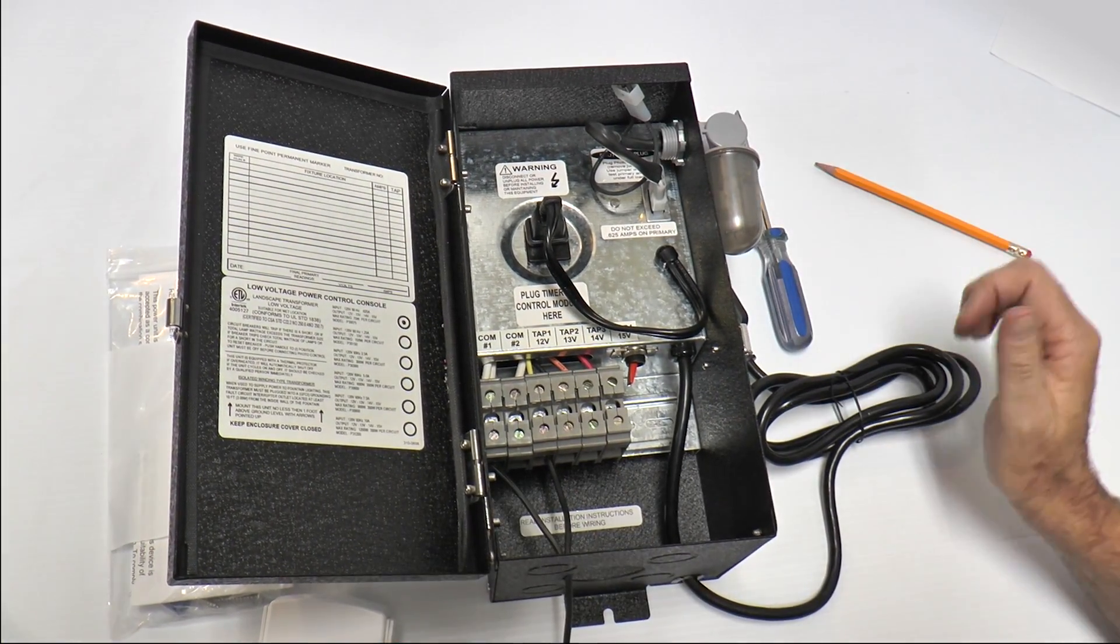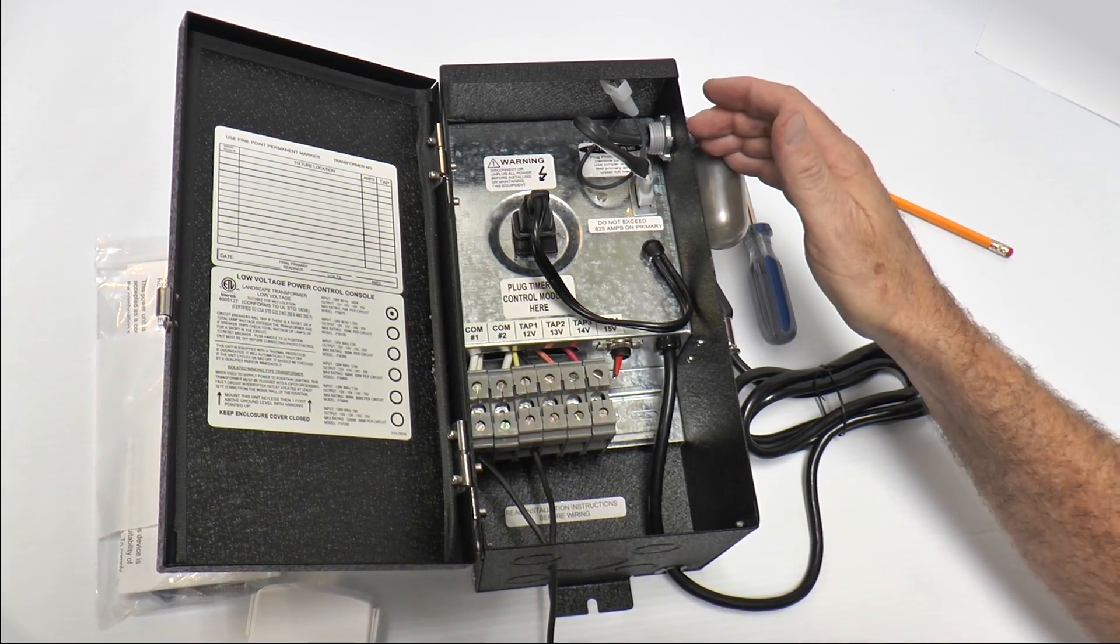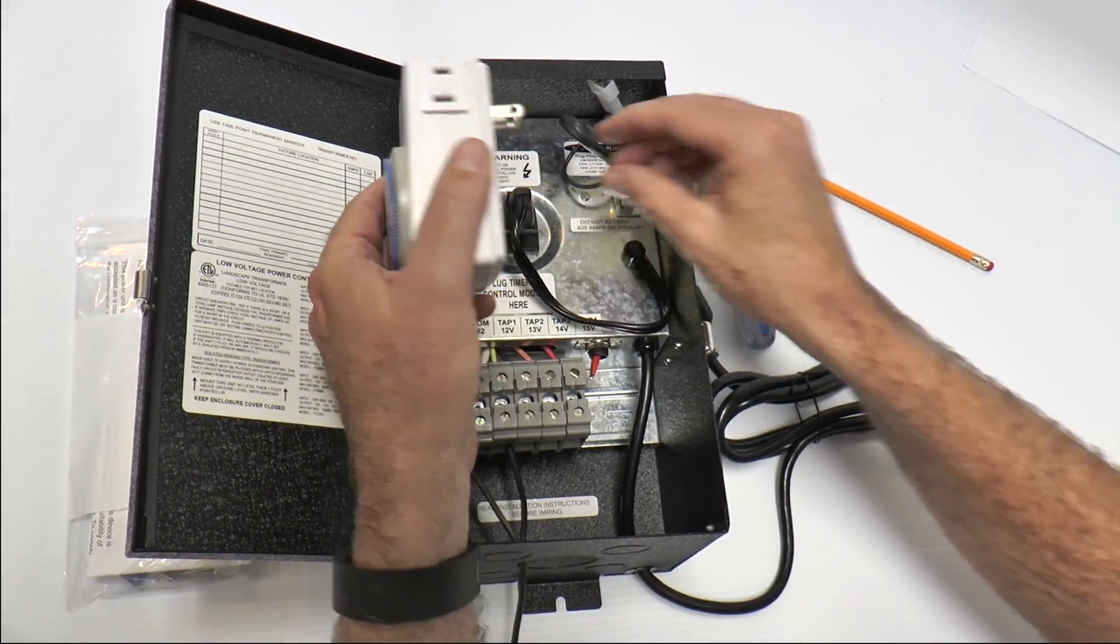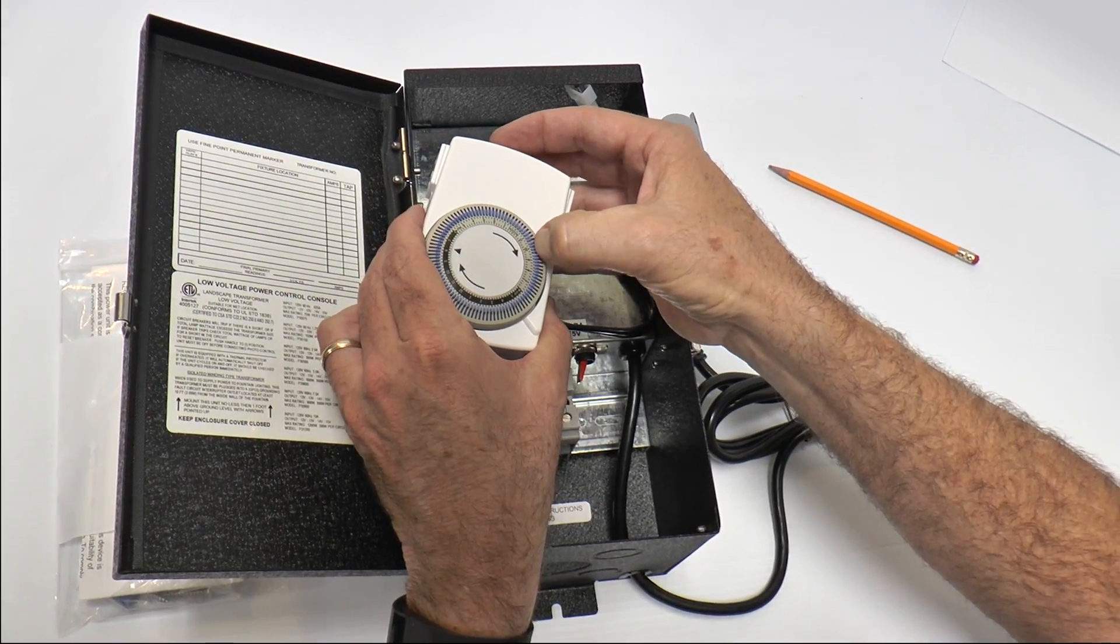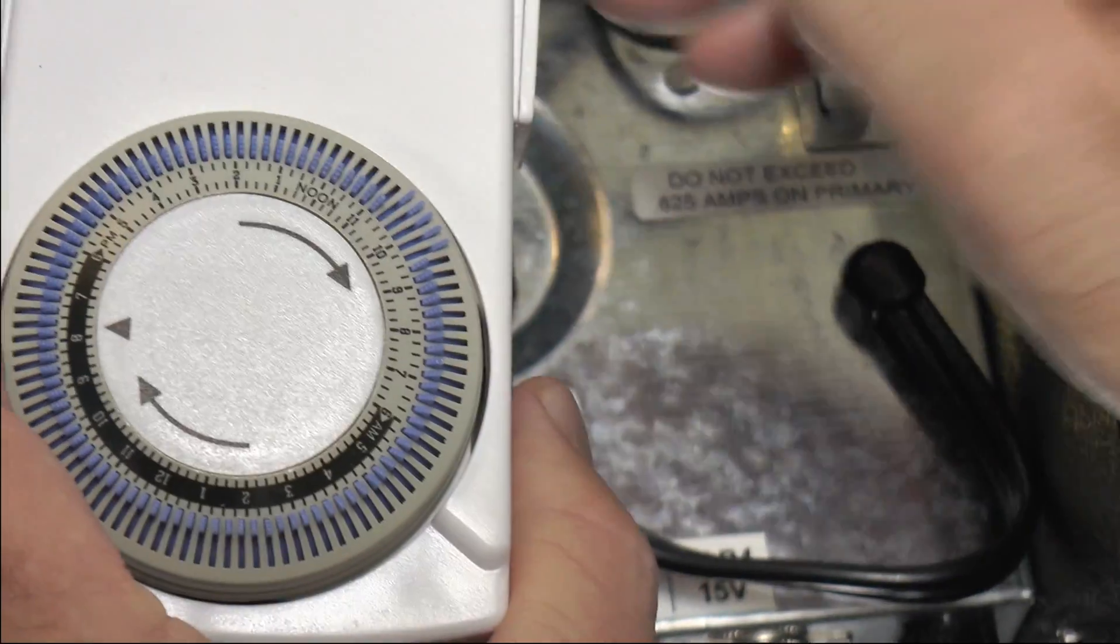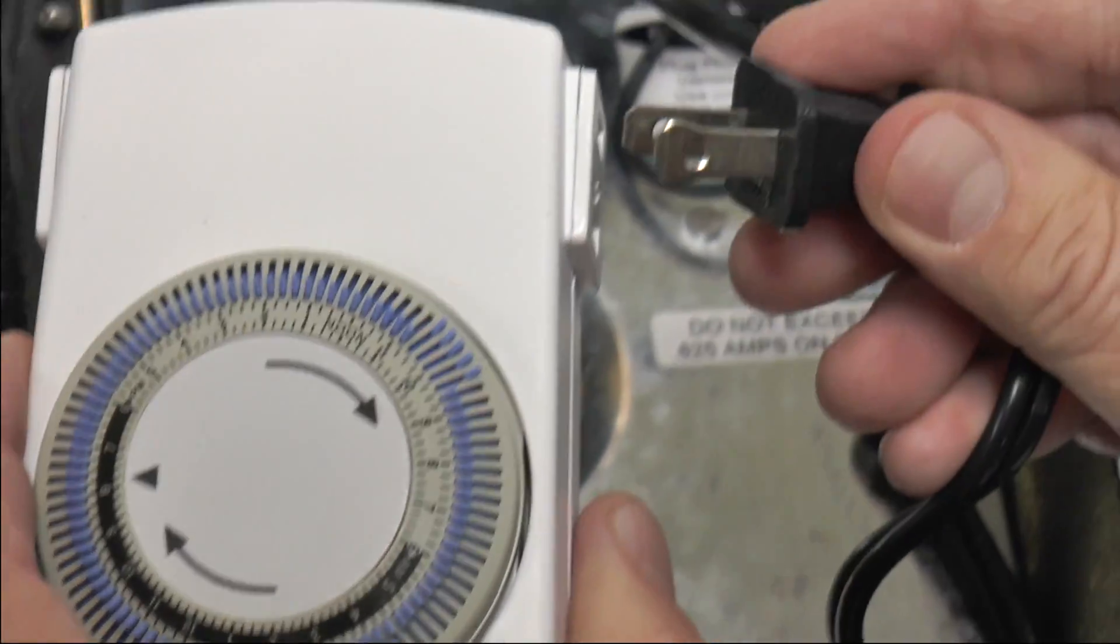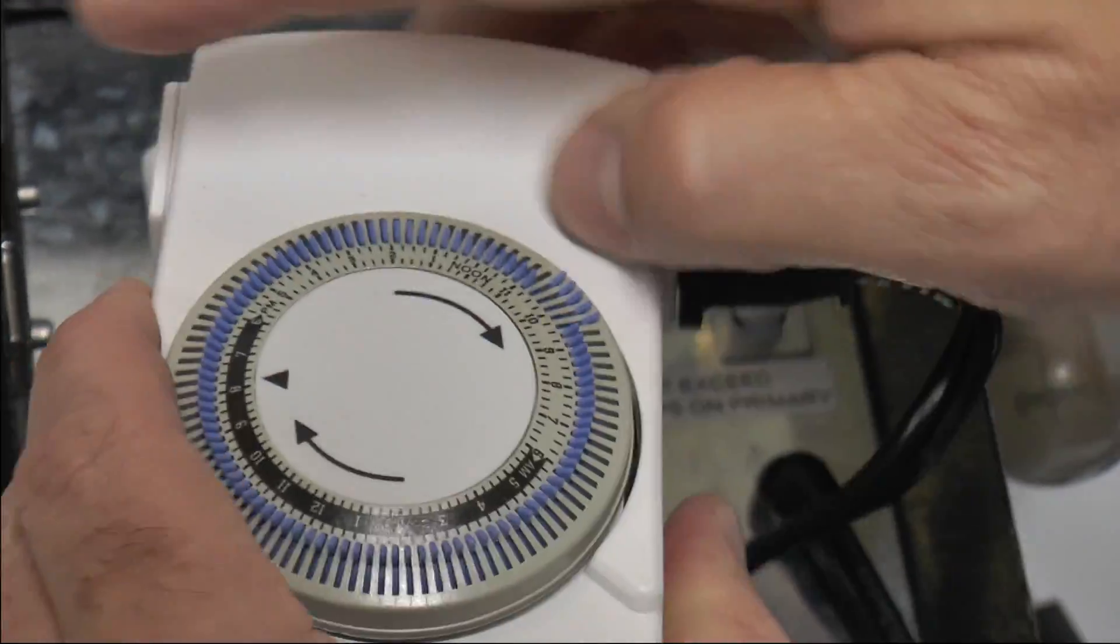This is our complete unit with optional photocell and timer. And here I'm going to put the timer back in for you. The timer has little switches here so you can have it on or off as much as you want during the night. And I'll tell you how I have mine set up.